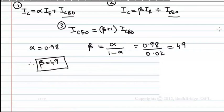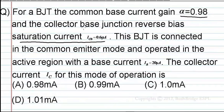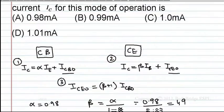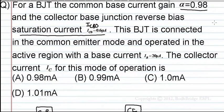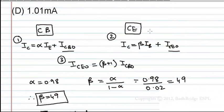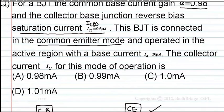Next, the common base junction reverse bias saturation current ICBO is given as 0.6 microamperes. The BJT is connected in common emitter mode, therefore which formula should I apply? Common emitter mode means this formula I should apply. Next, IB is given as 20 microamperes.